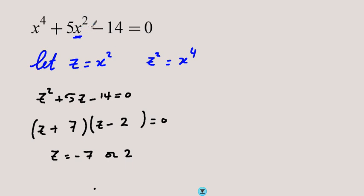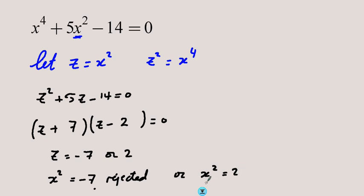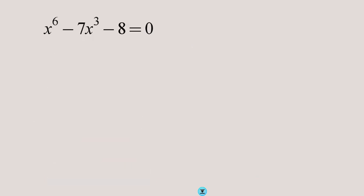But remember this equation was given in x, so the answer should be x equals something. Z is x squared, so x squared equals negative 7 — this is rejected because a squared term must be zero or positive, and there are no real solutions. Or x squared equals 2, which gives x equals plus or minus root 2. That is the solution to this degree-4 equation.